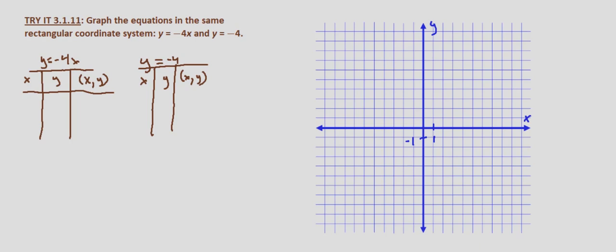You're going to end up with a slanted line, whereas with y equals a number it's just a horizontal line at that number. So we'll go ahead and graph both y equals negative 4x and y equals negative 4 on the same set of axes.